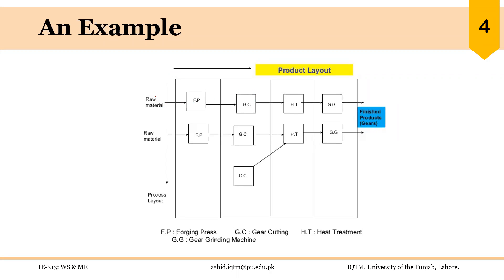The first activity performed is to issue the raw material from a warehouse or store. This raw material is generally purchased from an outside organization and stored for some time. It is then issued to the first process — forging in this case — and before the forging process is performed, it also has to be stored for some time. After forging, there is some waiting involved, and then the semi-finished part moves to the second operation, gear cutting, with some delay or wait in between.